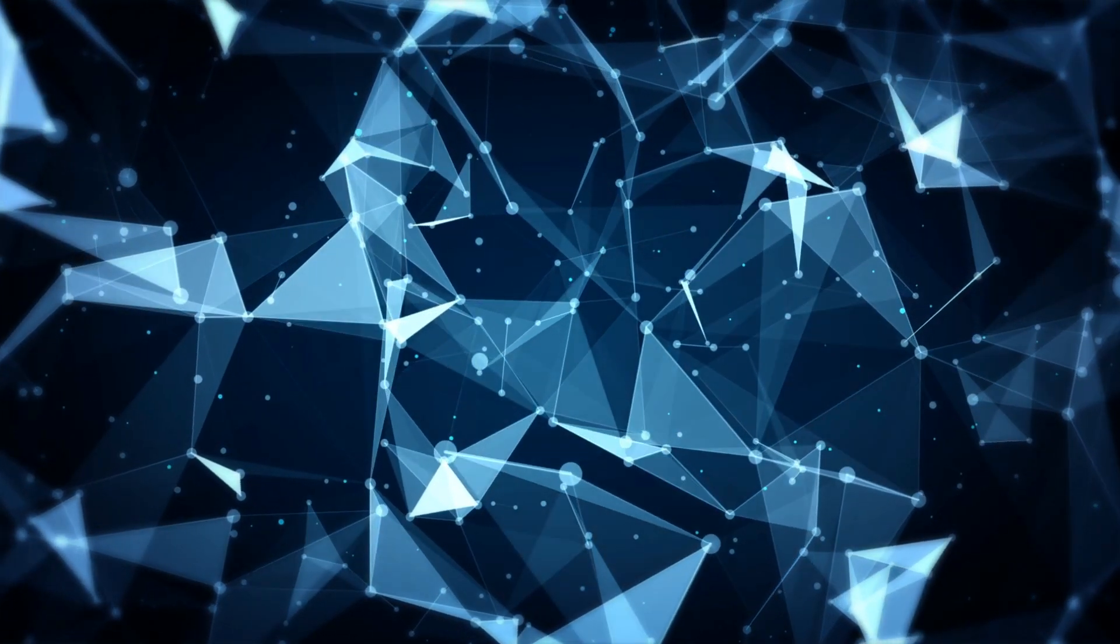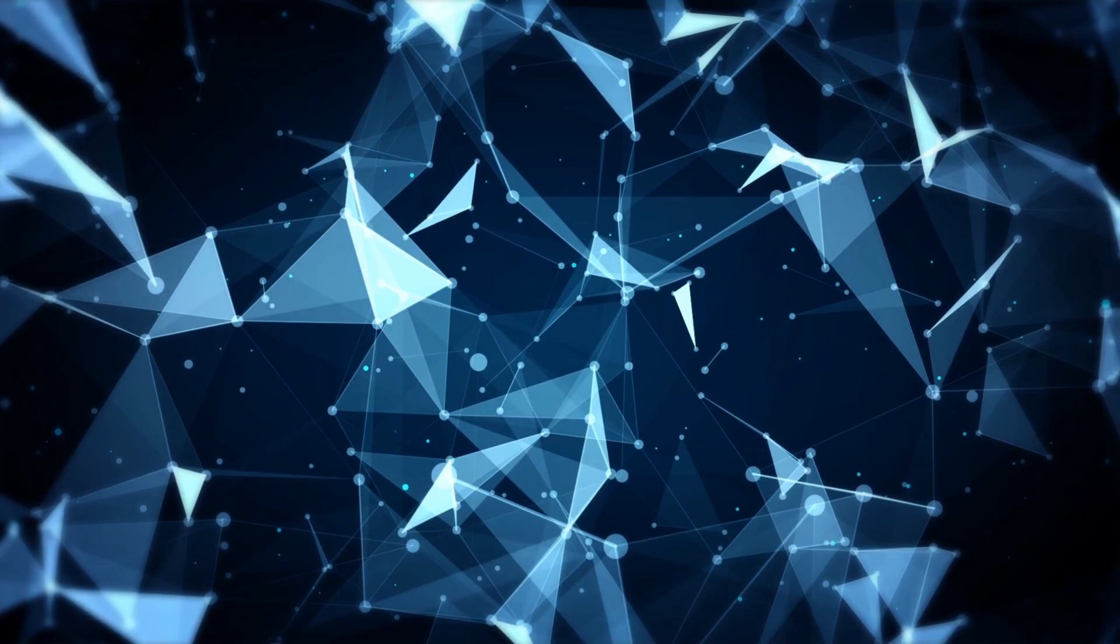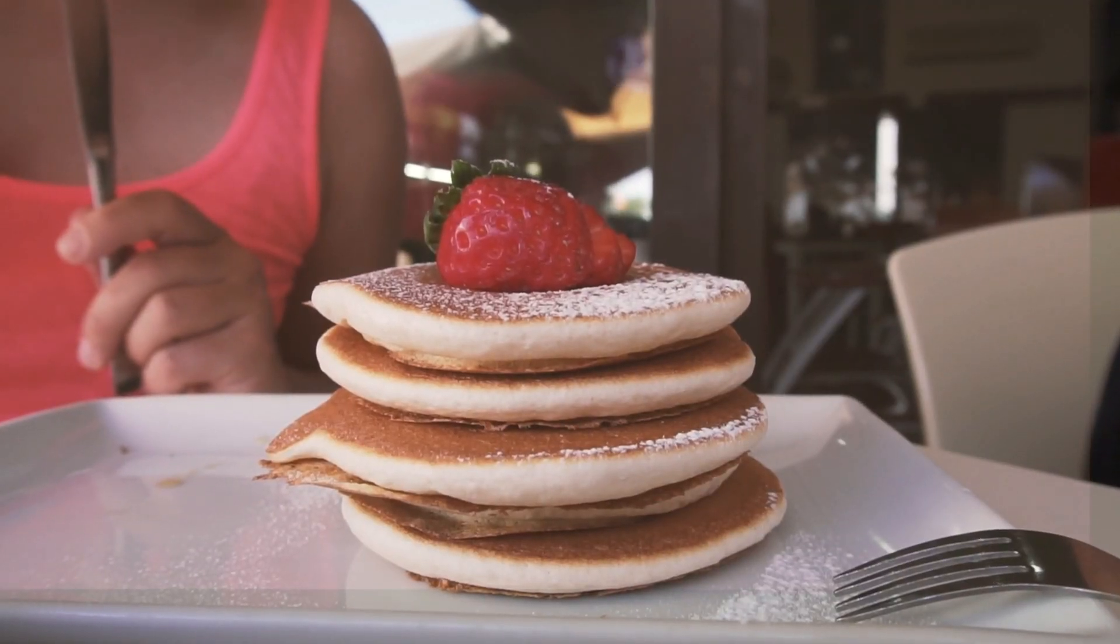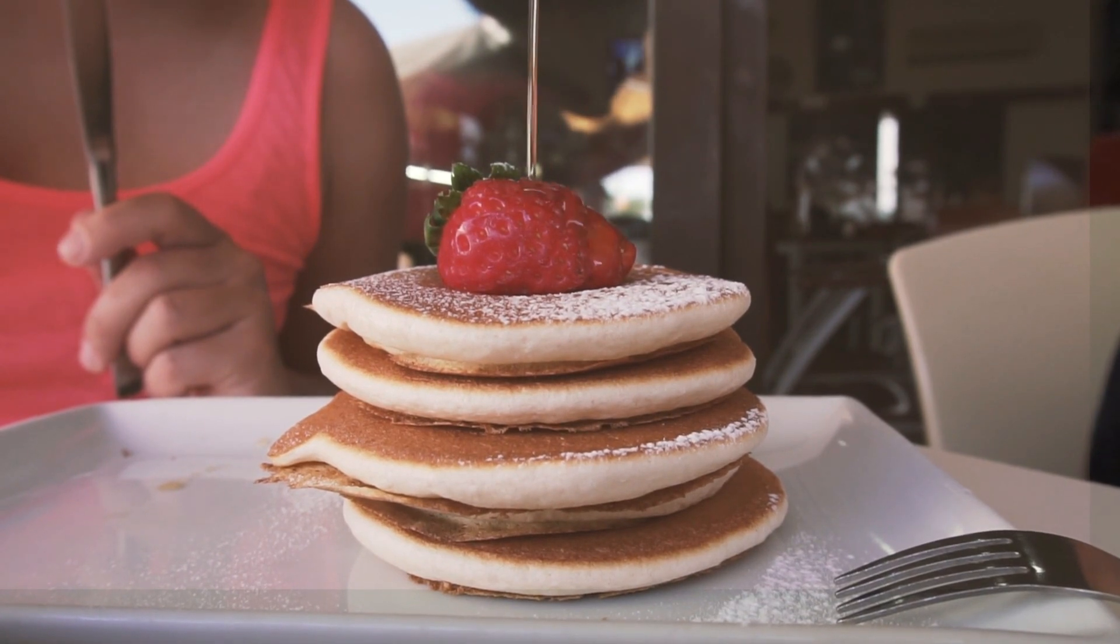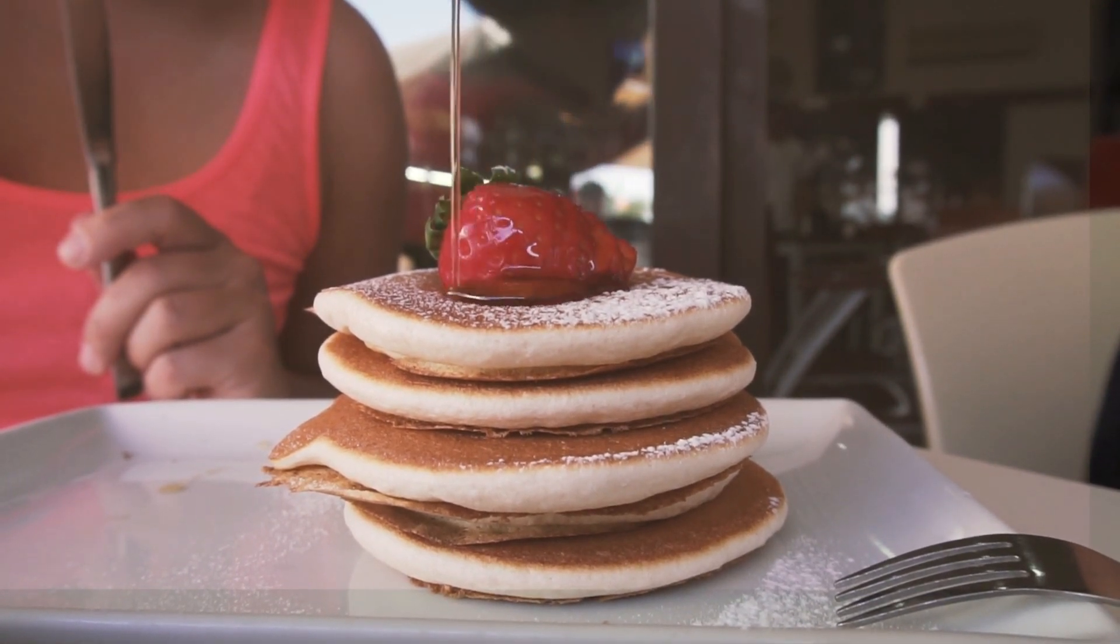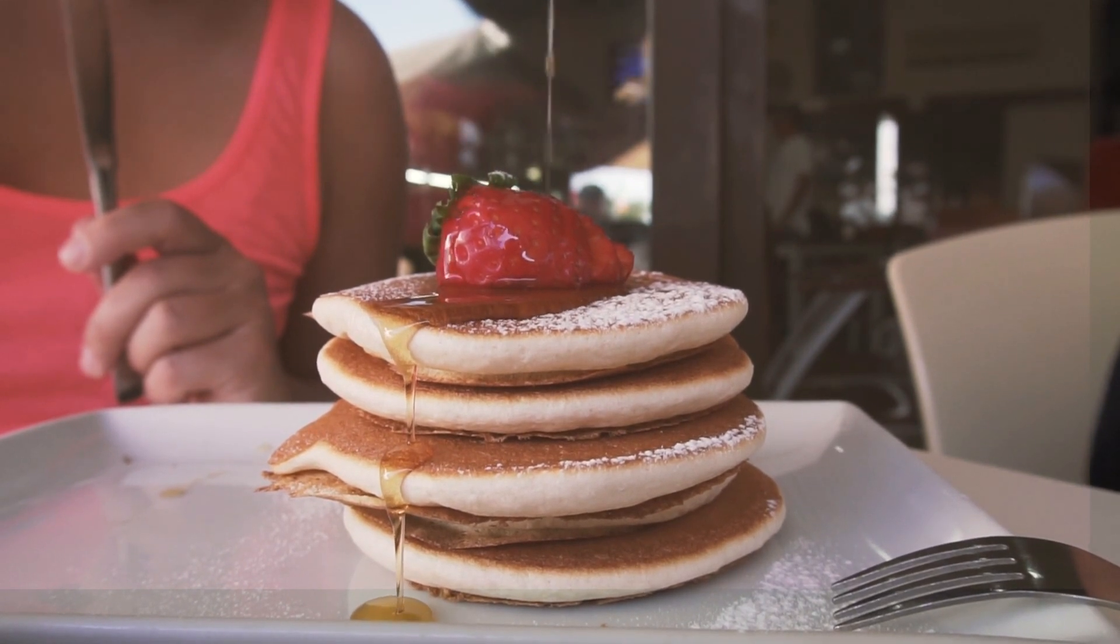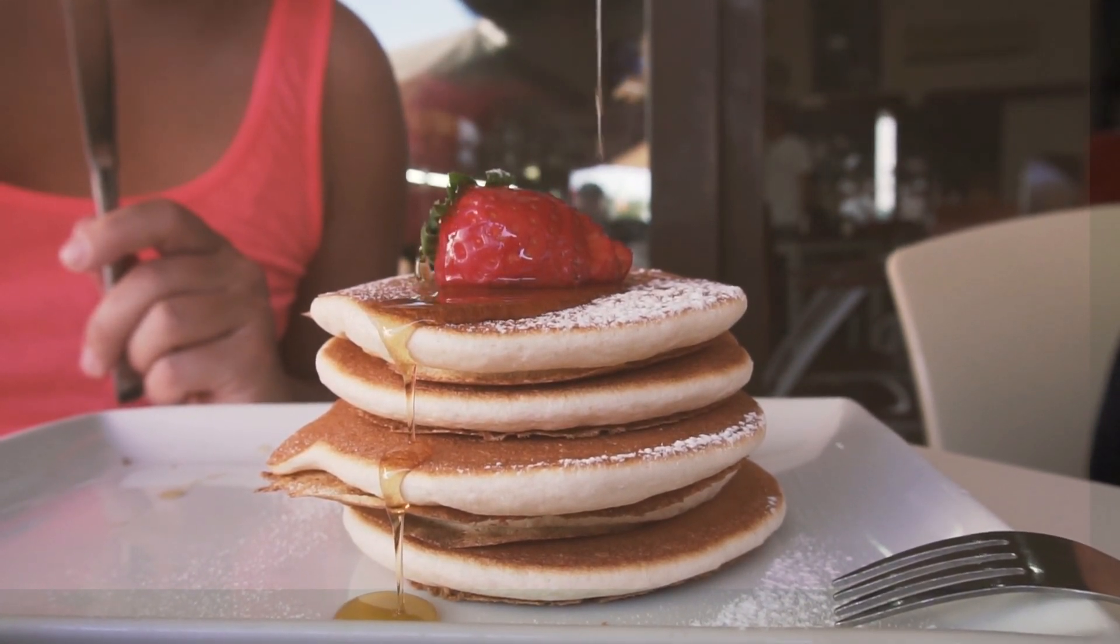When the value is smaller, no impressive things happen. Imagine baking a pancake with constant temperature. Under the threshold temperature, we cannot bake a pancake. We can only bake a pancake over the threshold temperature. Something special happens over the threshold.